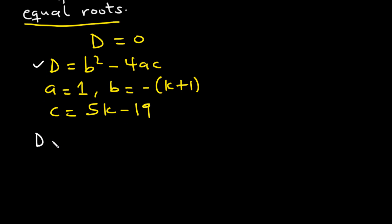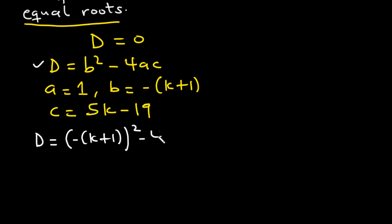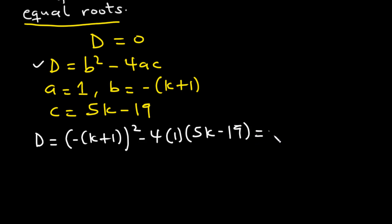Now let's substitute the values of a, b, and c into the discriminant equation. D is equal to b squared — and b is negative bracket k plus 1 — squared, minus 4 times a which is 1, times c which is 5k minus 19. This is equal to 0.